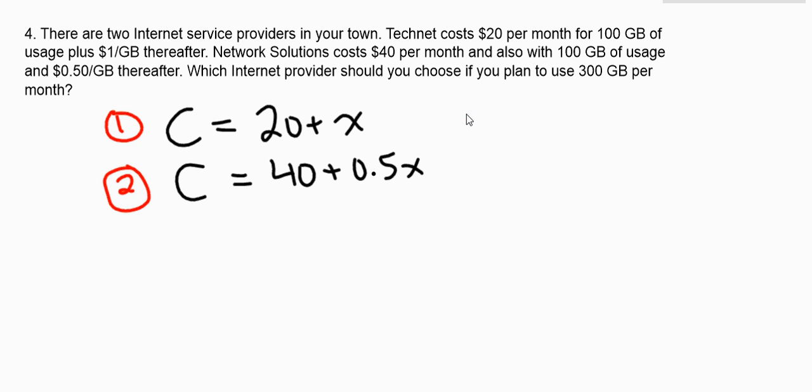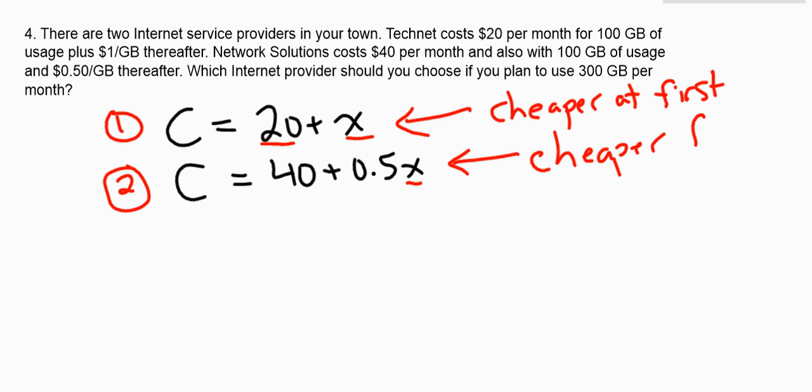One thing to keep in mind is that the first one, this is cheaper to begin with. If I knew I was only going to use 100 gigabytes, I would definitely go with the first company, because they start at $20. And if I'm not using any extra gigabytes, then they're definitely cheaper. But as I start to use more and more gigabytes, eventually they're going to reach a point where they both charge the same. And then at some point, at that intersection point, the second company is going to be cheaper. The more I use, the more likely it is that I want to use the second company. I just want to figure out exactly where the point is where the first company stops being cheaper and the second company starts.